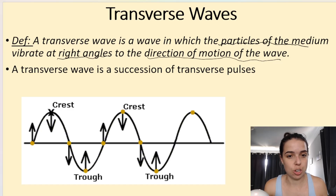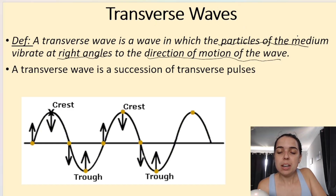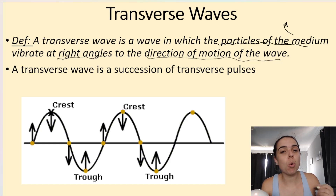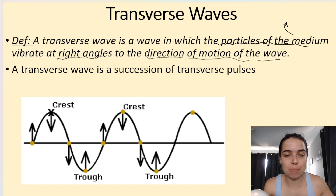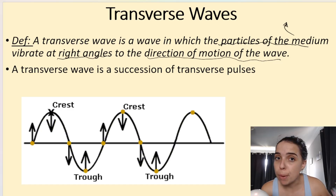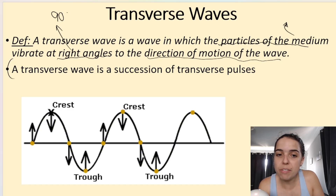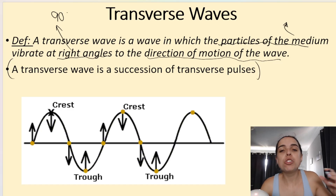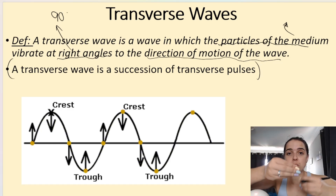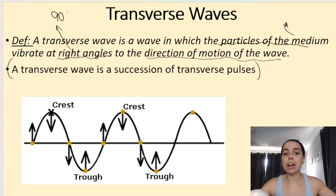There are a few things I want to point out in this definition. Transverse waves and longitudinal waves are mechanical waves, which means they require a medium like air or water to travel through. The particles of that medium vibrate — they move at right angles, which is 90 degrees, to the direction of motion of the wave. Also, a transverse wave is a succession of transverse pulses — transverse pulse after transverse pulse together gives you a transverse wave.